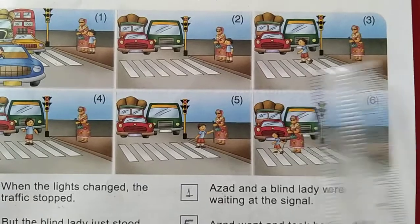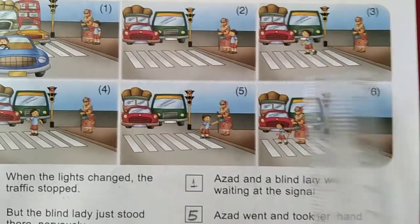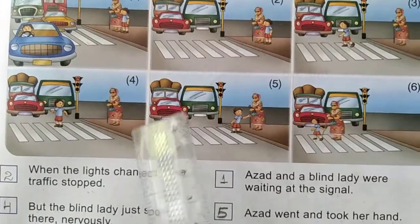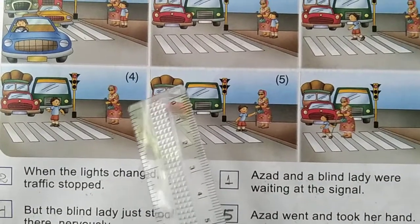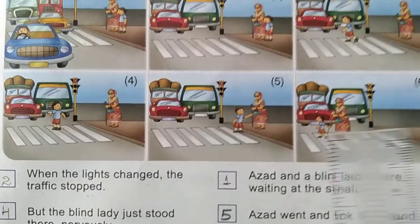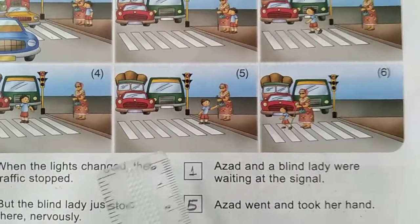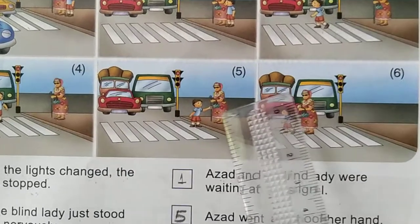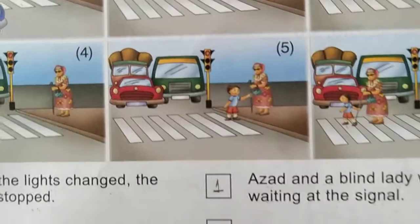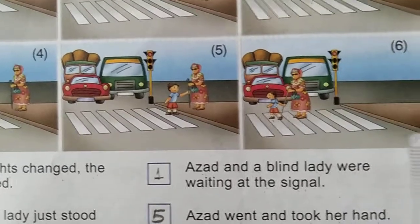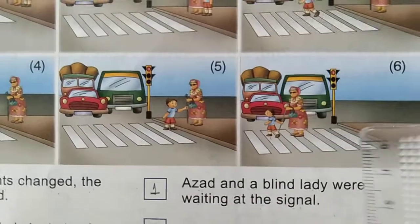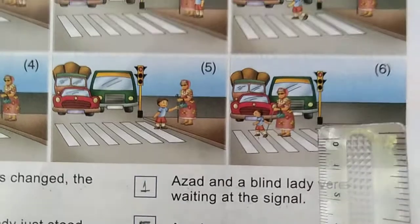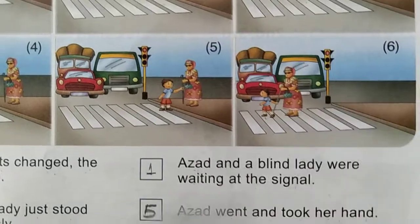Azat began to cross the road — that is a zebra crossing. But in the fourth picture, the blind lady stood there nervously. And in the fifth picture, Azat went and took the blind lady's hand. And in the last, sixth picture, he then helped her to cross the road — Azat helped this blind lady.